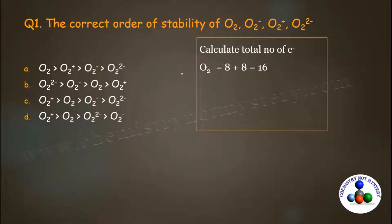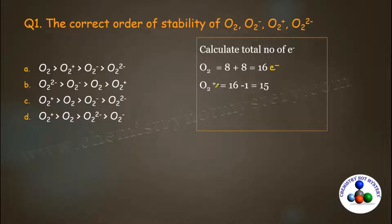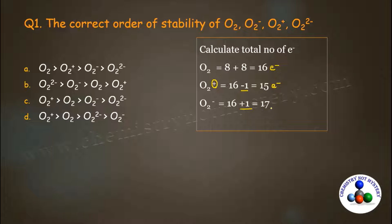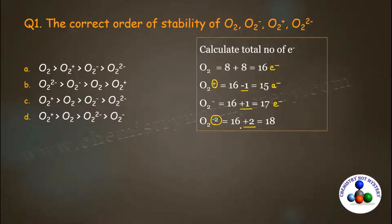In O2, there are two oxygen atoms and one oxygen atom has 8 electrons, so there will be 8 + 8 = 16 electrons. O2 positive ion is formed by the loss of one electron, so subtract one from 16 to get 15 electrons. In O2 negative, a negative ion is formed by the gain of one electron, so add one to 16 to get 17 electrons. In O2 2-, for two negative charge, add two electrons to 16 to get 18 electrons.